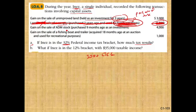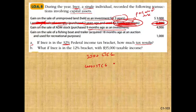Gain on sale of ADM stock purchased nine months ago as an investment. So this is short-term and it's a gain — a $4,000 short-term capital gain.